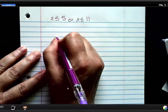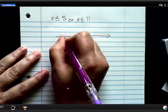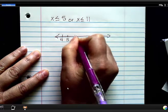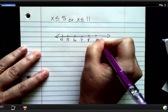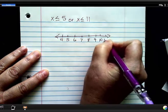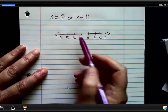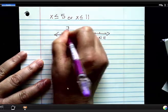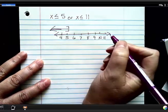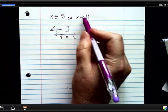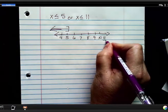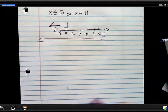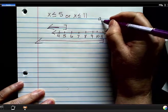So I'm going to graph these both on a number line. And x is less than or equal to 5 would be a bracket going here. And x is less than or equal to 11 would be a bracket here going this way. Now remember, or means all together.